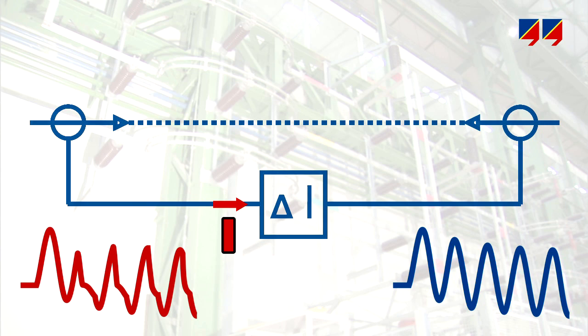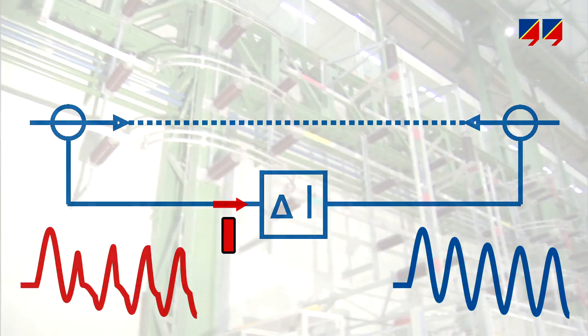Especially for small fault currents, saturation may not be detected by the relay, since its corresponding saturation detection algorithms usually require multiples of nominal current for their activation.